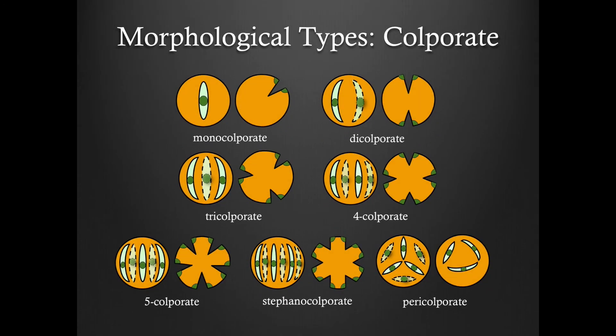Now let's take a look at the various morphological types for colporate grains. The naming convention remains the same as with the porate and colpate morphological types. Remember, each colporate is considered to be a single aperture.